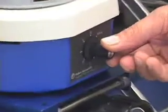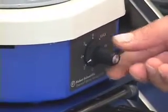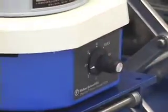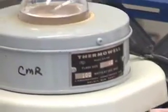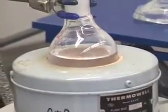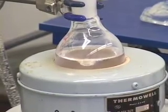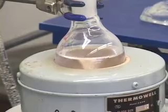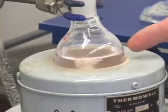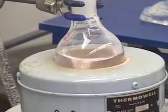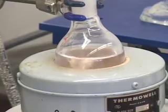Let us turn the stir bar on and notice that the magnetic stirrer is stirring the liquid and you can see a vortex in there. You don't want the vortex to be jumping too rapidly.